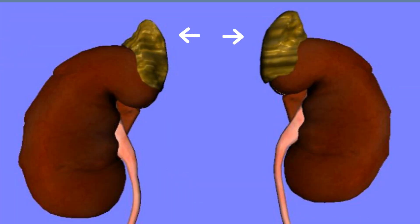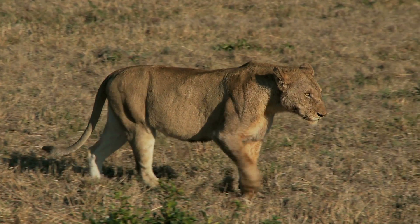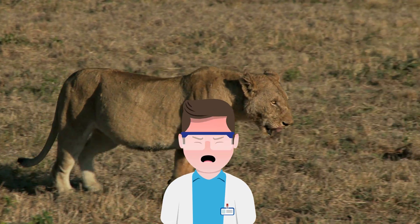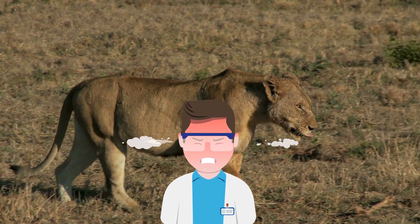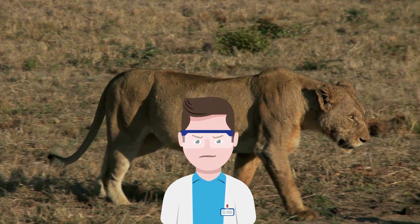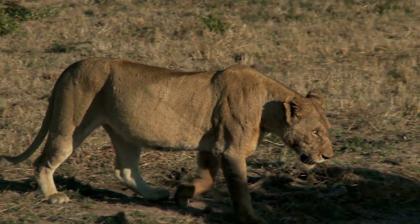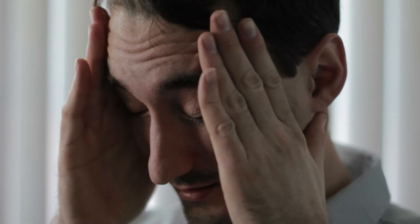The adrenal glands are located at the top of your kidneys and they help you to respond to danger by secreting adrenaline. In addition, it helps to control protein and fat and also to react to major stressors like illness or injury.